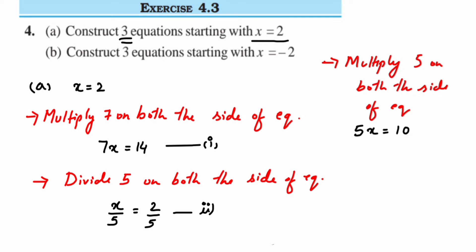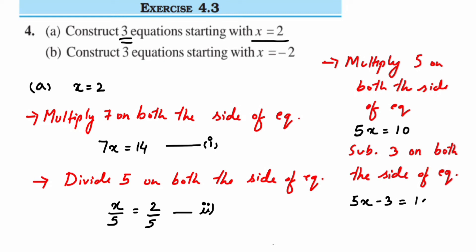That's not yet my final equation — it's similar to the first one where I multiplied by 7. I want to create a more different equation, so after getting 5x = 10, I'll subtract 3 from both sides. That gives me 5x - 3 = 10 - 3, so 5x - 3 = 7. This is my third equation. You can create any equation by adding, subtracting, or dividing — whatever comes to mind.